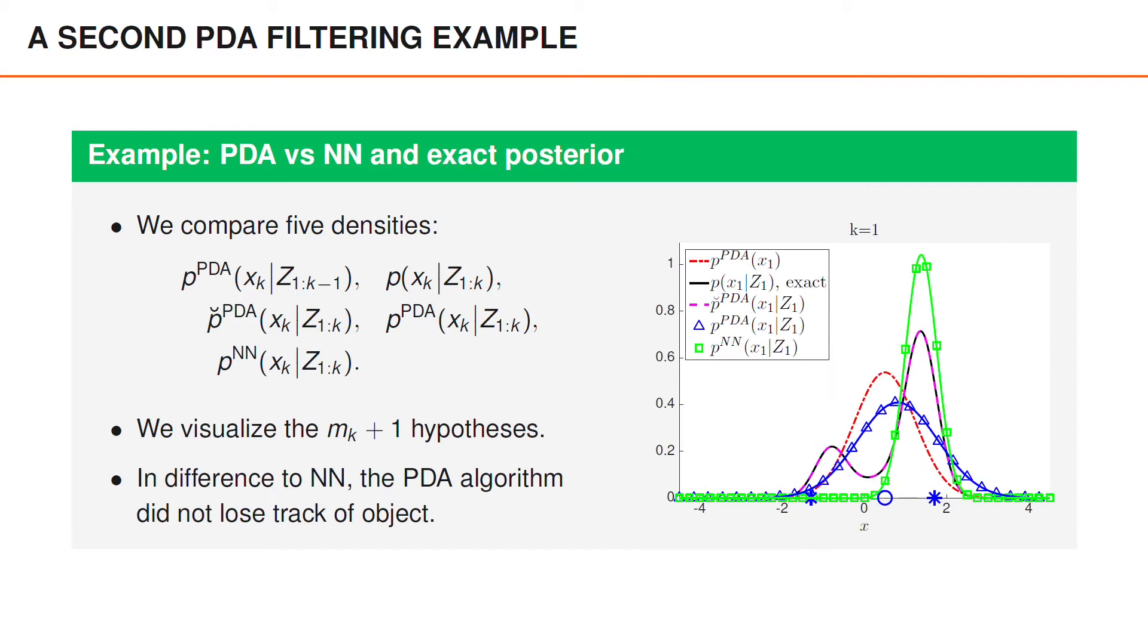So, at least in this scenario, the PDA performs better than the nearest neighbor algorithm and manages to keep track of the object fairly well.